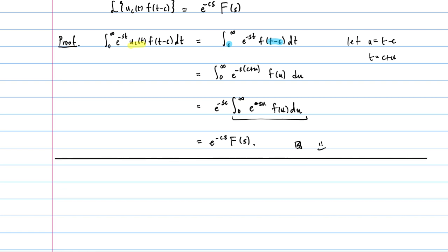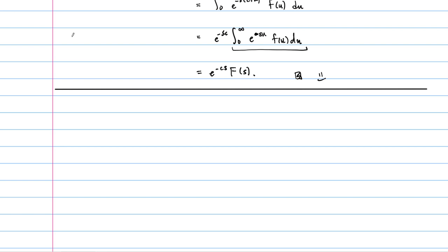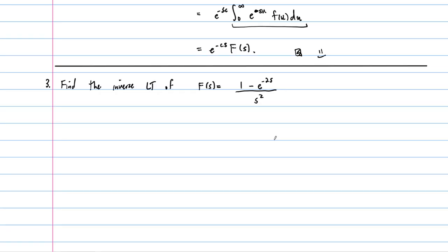Before solving a differential equation, let's find the inverse Laplace transform of capital F of s equals 1 minus e to the minus 2s, all over s squared. There's no formula to go backwards, so we break it up: this is 1 over s squared minus e to the minus 2s times 1 over s squared. We recognize each piece individually.